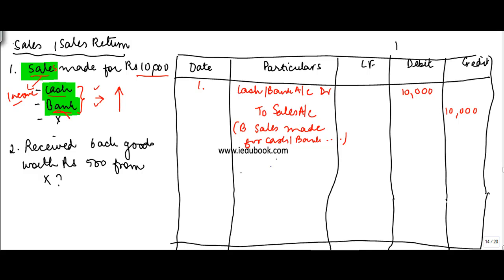So when I sell goods to X, X becomes my debtor, or I have to receive money from him. So X is basically an asset for me. The value of X hitherto was zero, but now he is going to have 10,000 because he has to pay me 10,000. An increase in an asset is what? Debit it. So what do I do? In this case, I debit X to sales account.